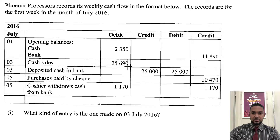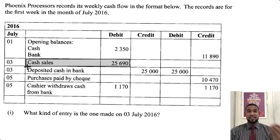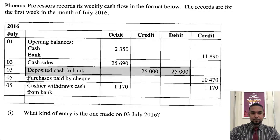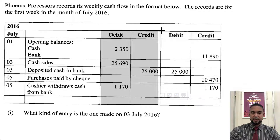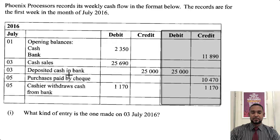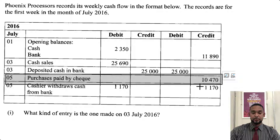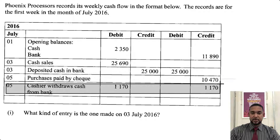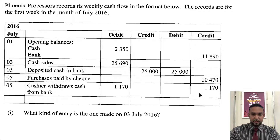Next, we have cash sales as a debit item — that's normal. If you make a cash sale, you're going to have money coming in, so that's going to be debited to cash. Then we have cash deposited in bank — that's a contra entry. You're taking money out of cash and putting it into the bank, probably to clear the overdraft. Then we have purchases paid by check — we paid for some purchases now that we have some cash in the bank. And cashier withdraws cash from bank — so you put some money in and then took it out a couple of days later.